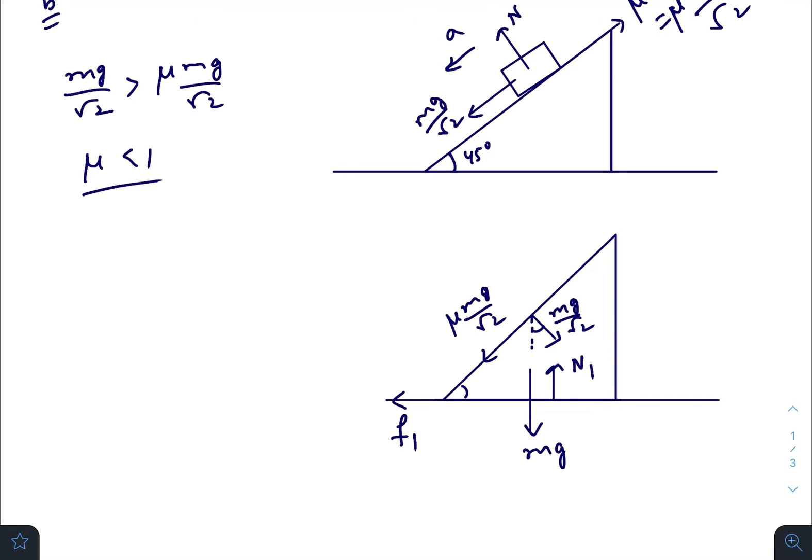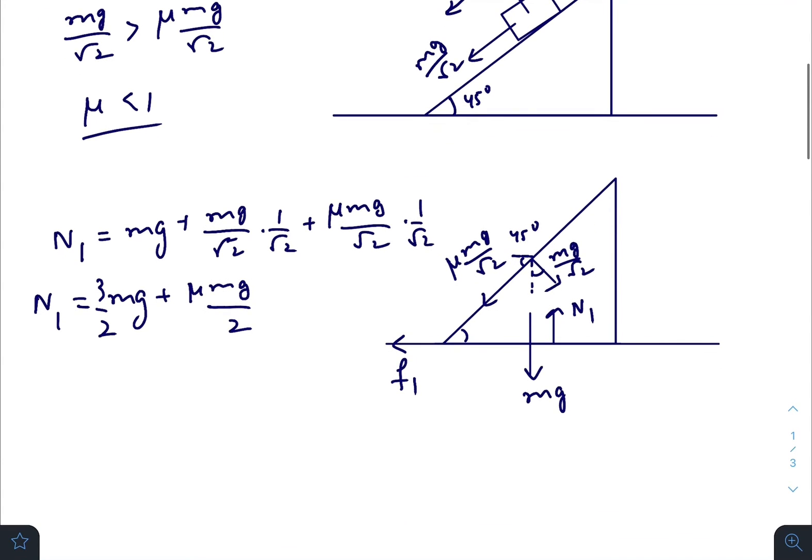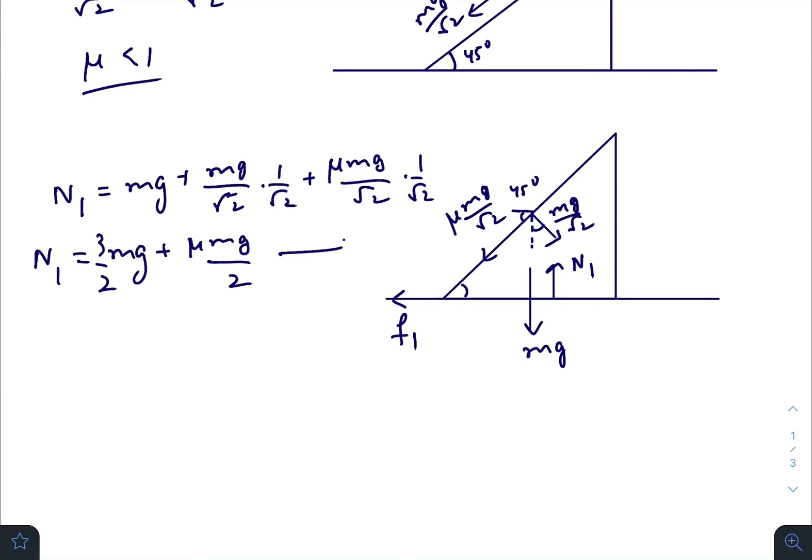If this one is 45 degrees, this one is also 45 degrees. Let us find the normal N1 first by equating the vertical components to zero. We have N1 equals mg plus mg/√2 cos 45 plus μ mg/√2 sin 45. So N1 becomes mg plus 3mg/2 plus μ mg divided by 2. This is our normal, let this be our first equation.